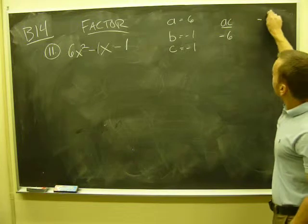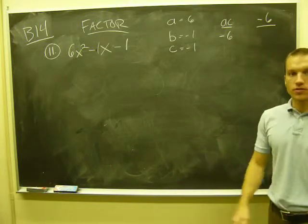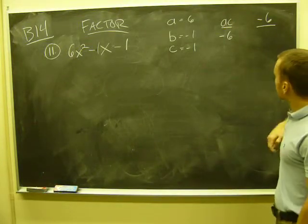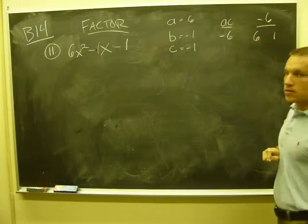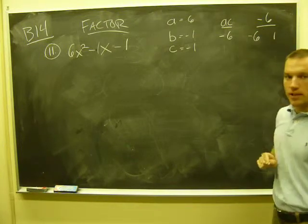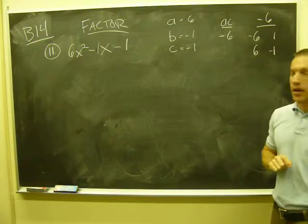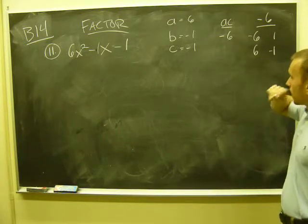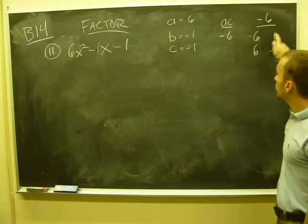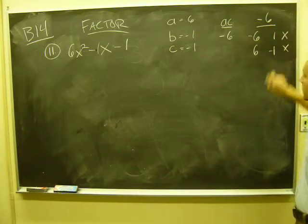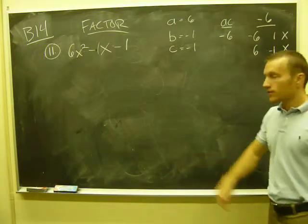So what I do, if I can't figure out those two numbers, I can list all my factors of 6. 6 and 1, one would have to be negative to give me a negative 6. It could be like that, right? And remember, they have to add together to give me negative 1. So I know these aren't going to work. No good. Other factors of 6.